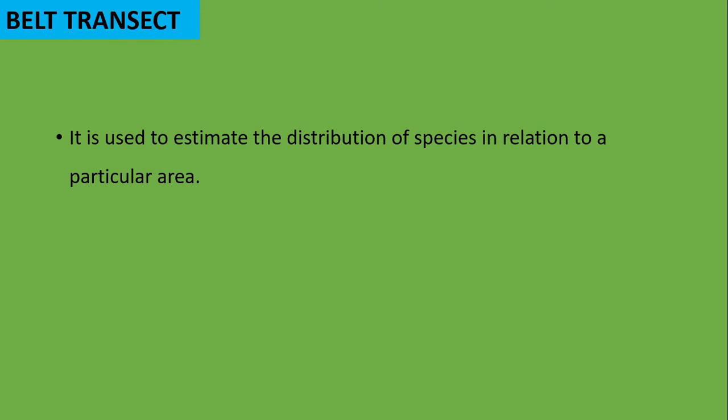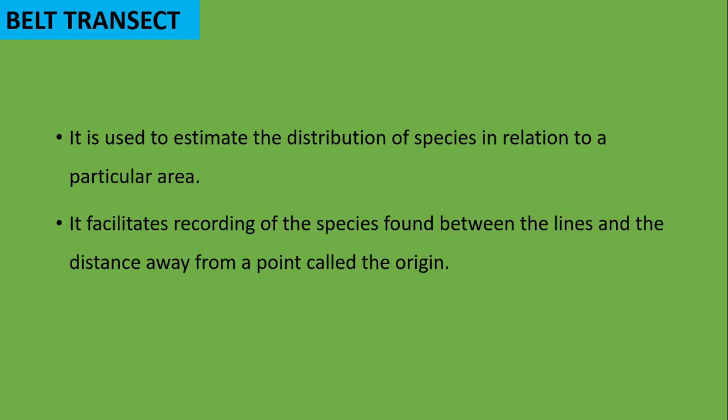The belt transect is used to estimate the distribution of species in relation to a particular area. It facilitates recording of species found between the lines and the distance away from a point referred to as the origin.